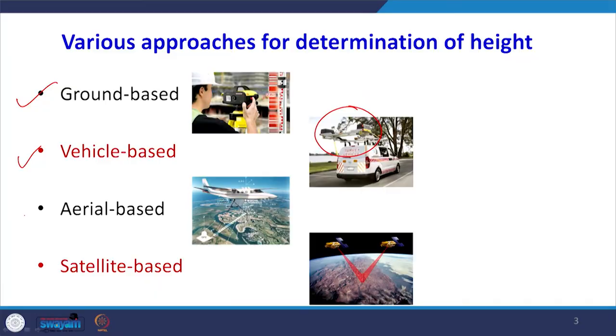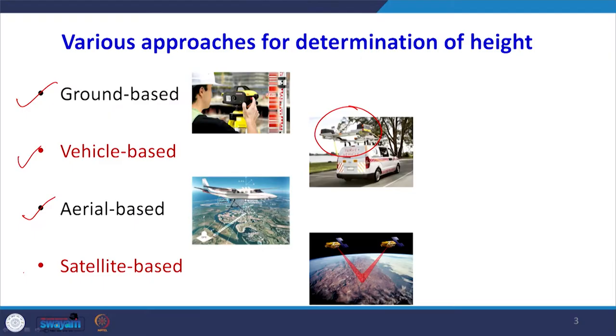The third category is aerial-based, which we are discussing today — how aerial photogrammetry is used. Under aerial-based survey, drone technology and UAV technology are also playing a very important role. We can determine height from those images as well. The last method is satellite-based, where data is taken from a much higher altitude. Each method operates from a different working platform, and the accuracy of measurements is affected accordingly.